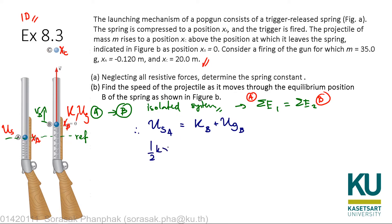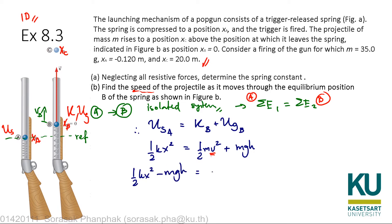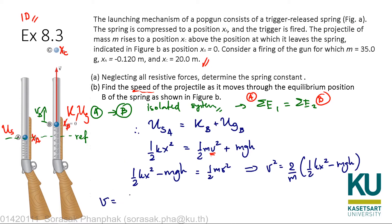From this relation: elastic potential energy at A equals kinetic energy plus gravitational potential energy at B. So ½kx² = ½mv² + mgh. Rearranging to find v: ½kx² − mgh = ½mv², which gives v² = (2/m)(½kx² − mgh). This expression can be used to determine the velocity at point B.